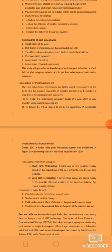Short-term forecasting covers one or two seasons and is mainly based on the population of the pest within the crop by sampling method. Long-term forecasting covers large areas and is based mainly on the possible effect of weather on the insect incidence — for example, the locust warning station.